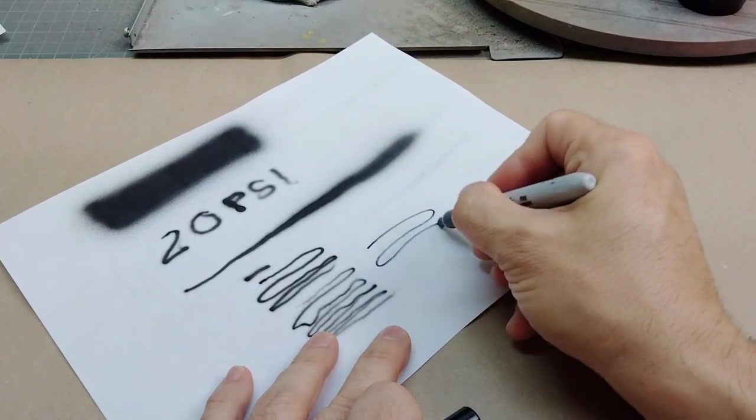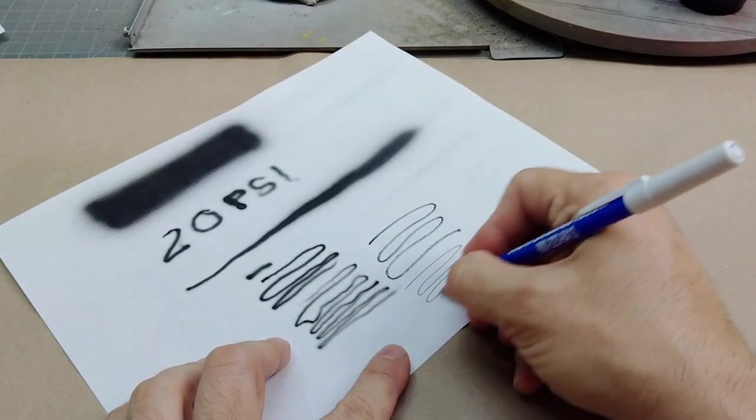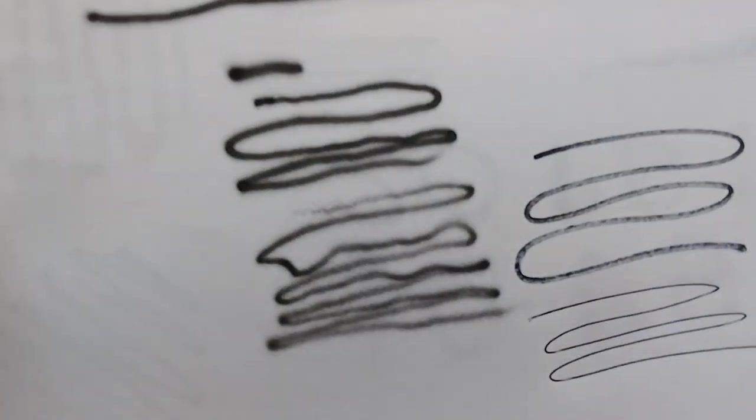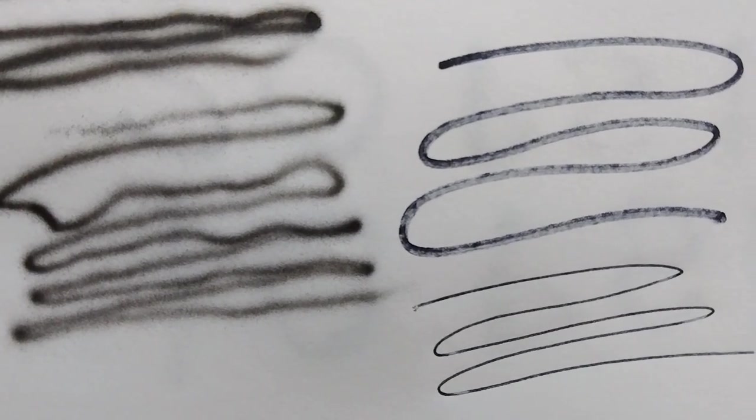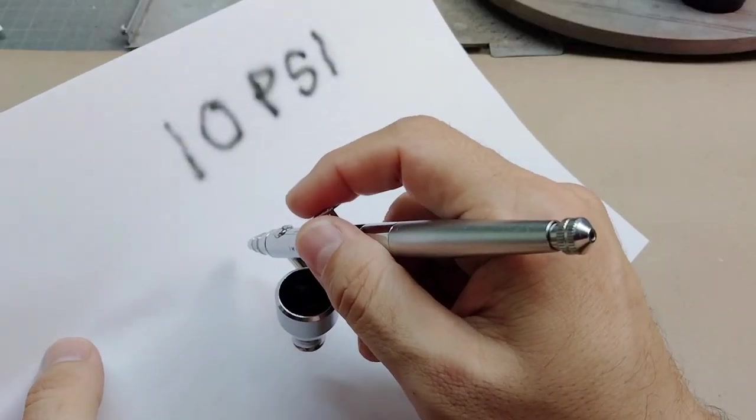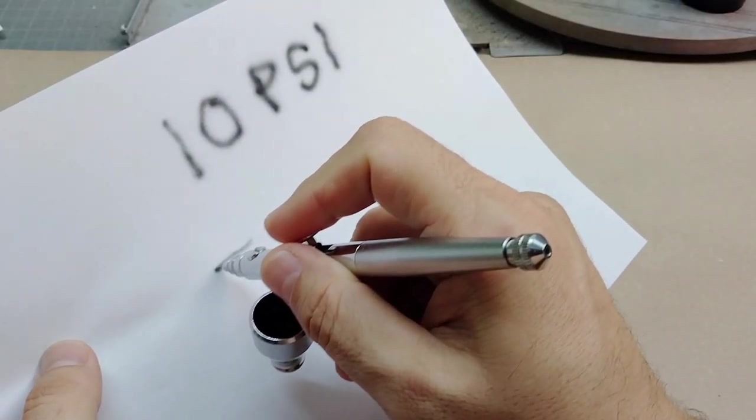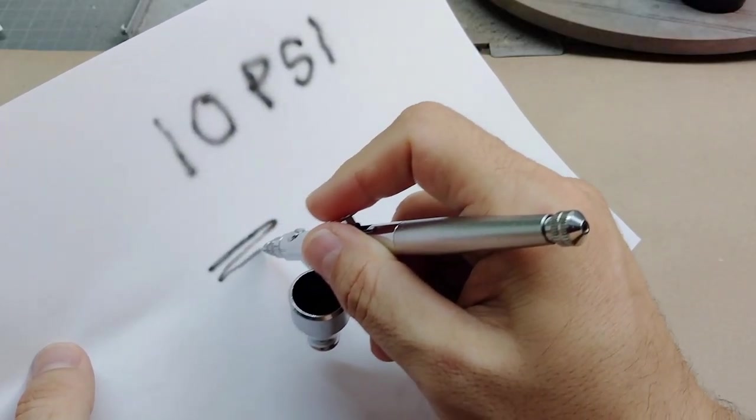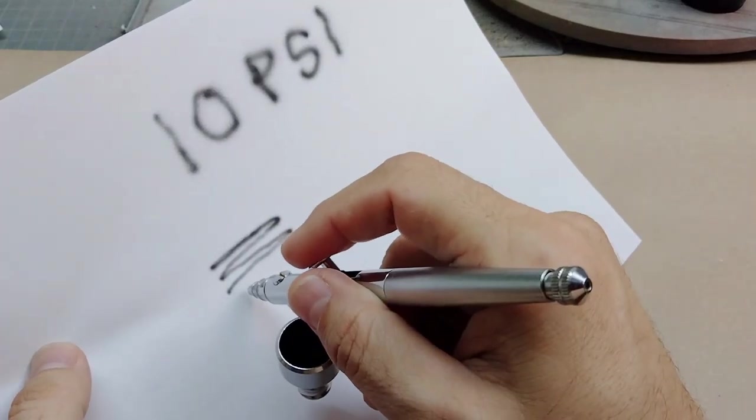Using a Sharpie and then a ballpoint pen as a frame of reference, you can see how tight the line and control gets with this type of setup. Dropping the psi down to 10, we do another set of tests to see how tight and how close we can get the fine detail work.